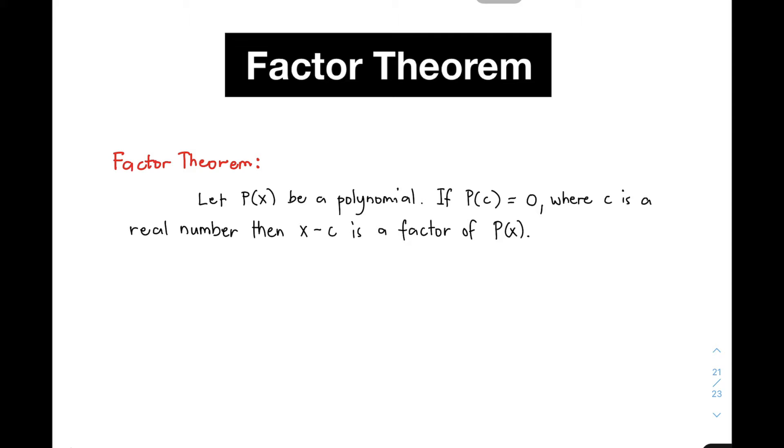Let P of X be a polynomial. We are given a polynomial. If P of C is equal to 0, where C is a real number, then X minus C is a factor of P of X.